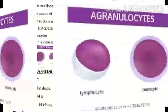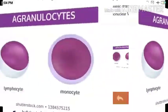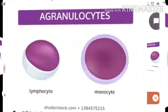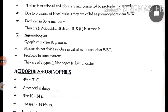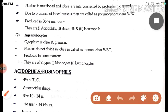Agranulocytes ki baat karte hain — inme cytoplasm clear aur agranular hota hai. Nucleus do not divide in lobes — divide nahi hota, jabki granulocytes ka nucleus multi-lobed hota tha. So called mononuclear WBCs. Yeh bhi produced in bone marrow hoti hain. Yeh do prakar ki hoti hain.